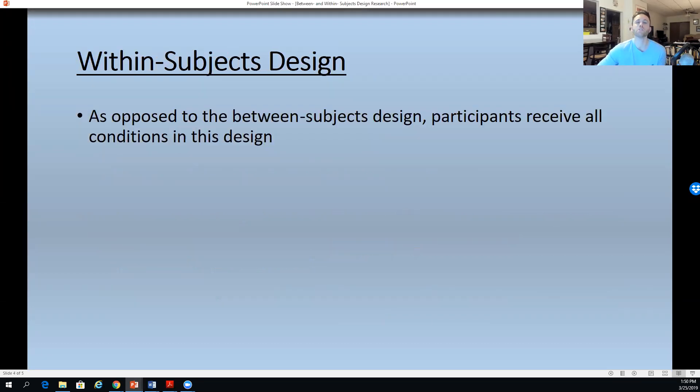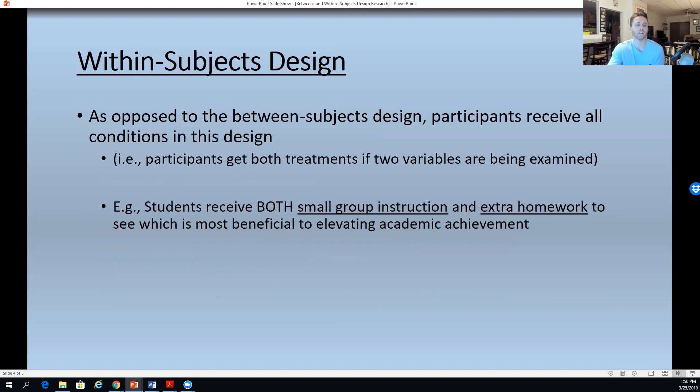Shifting now to the within subjects design, as opposed to the previous one, all the participants in this design receive all of the conditions. And I know that might sound weird on the surface, because sometimes we think experimental control, two different groups, but oftentimes we can use one group to be able to determine the differences. An example of this, where participants get both treatments, would be where students in a classroom could get small group instruction and also get extra homework in order to try to lead towards academic achievement. And we can do some analyses on the back end to see which of those actually led to better academic achievement growth.